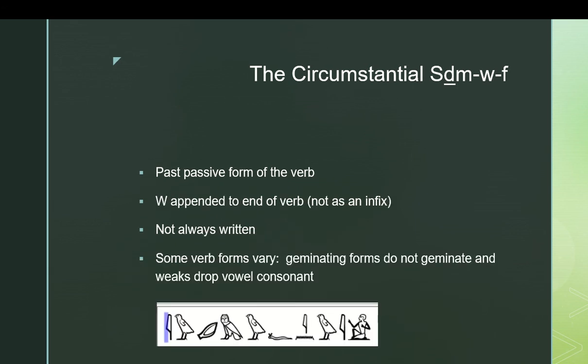And then the past also has its own passive form, the sdjm-w-f. The w is appended to the end of the verb, not really an infix, as with the n. The w is not always written. And this one does have a few other indicators. Those third geminate forms do not geminate, and the weak verbs drop that final vowel consonant, that I or Y or W. And then again, using that same sentence, with that uncommon marker, we have iw sdjm-w-f in-wi, so he was heard by me.